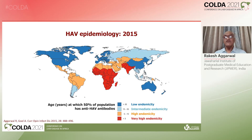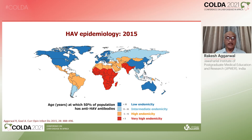This is how the parts of the world show different endemicity patterns: red indicating very high endemicity, orange high endemicity, light blue intermediate endemicity, and dark blue low endemicity.